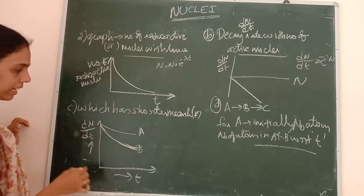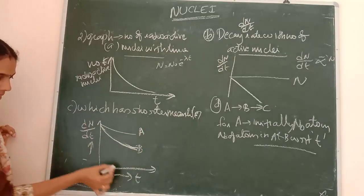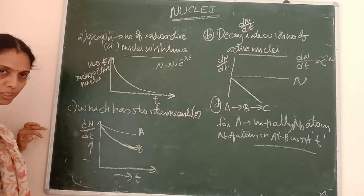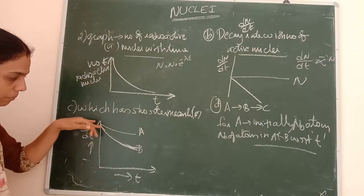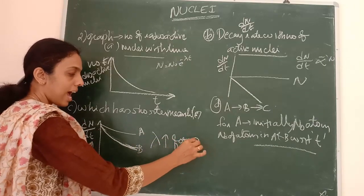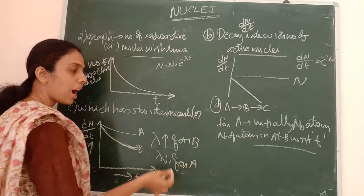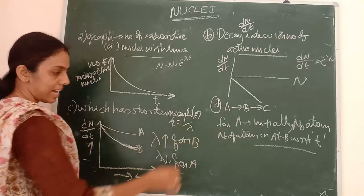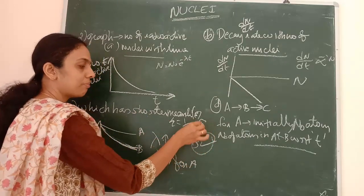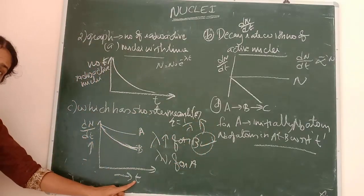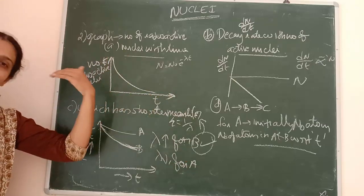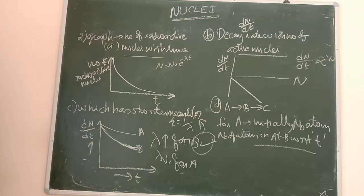Next graph: two curves A and B showing dN/dt versus time. For curve B, the rate of disintegration decreases more steeply, meaning λ is greater for B. Since mean life τ = 1/λ, if λ is greater for B, then B has a shorter mean life. So B has the shorter mean life.